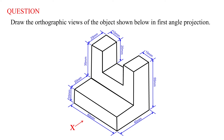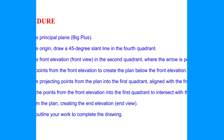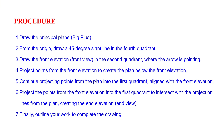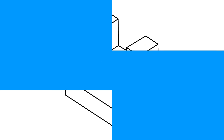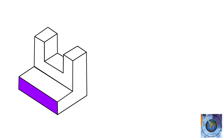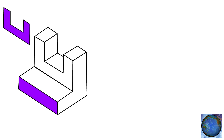This is the question we are going to solve, which will help us understand how to draw the orthographic view of an object using first angle projection. We'll follow these steps to solve the given question. Pay close attention to the demonstrations throughout the video and watch until the end, as this will help you solve the given question and any similar ones related to first angle orthographic projection.